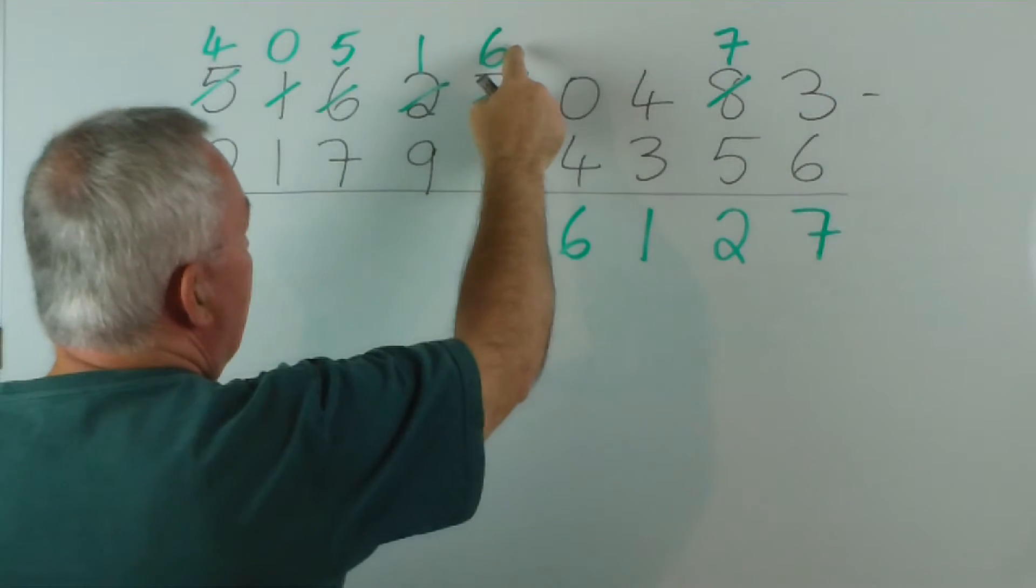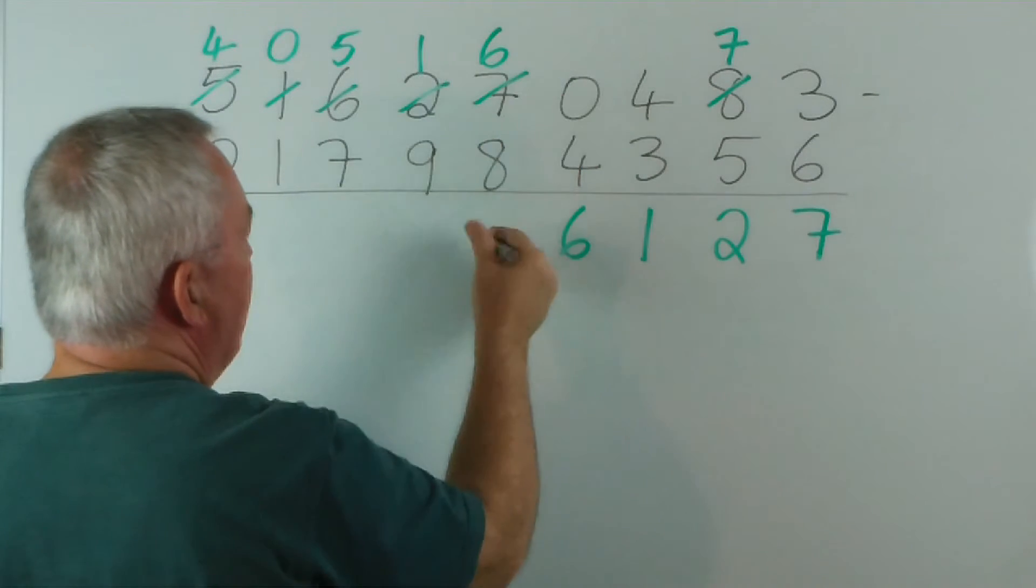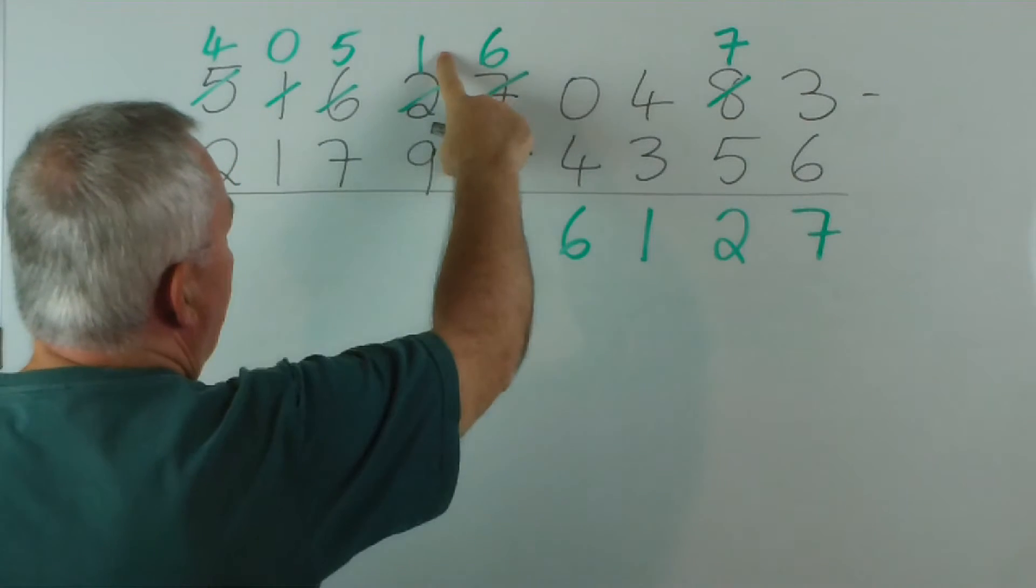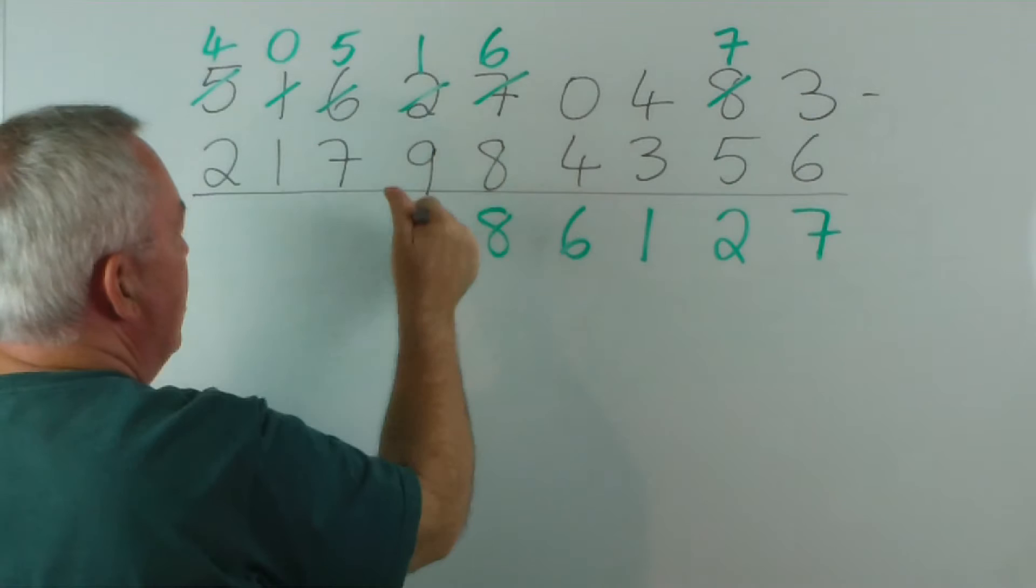This one: 8 from 6 we can't do, so the difference is 2, and we take it from 10. 10 take away 2. 9 is larger than 1. The difference is 8, so we subtract 8 from 10.